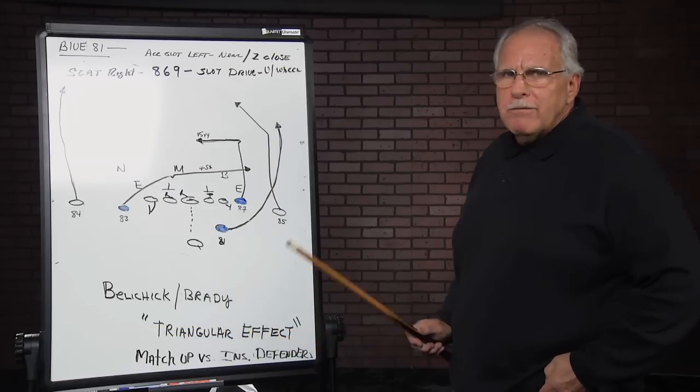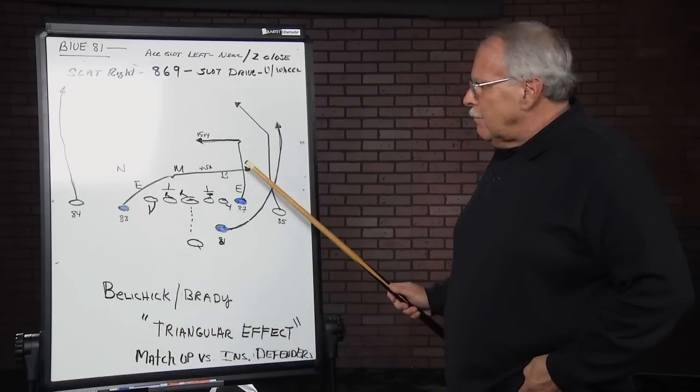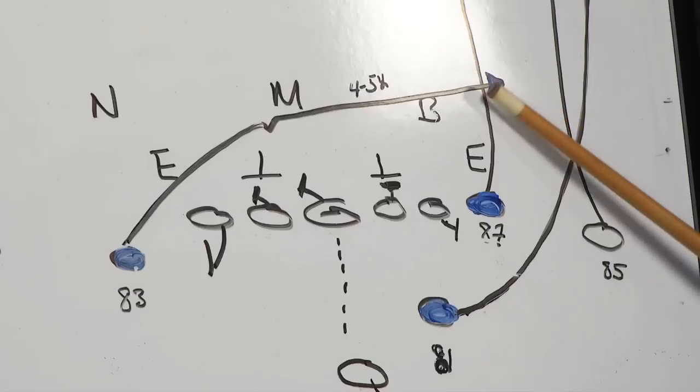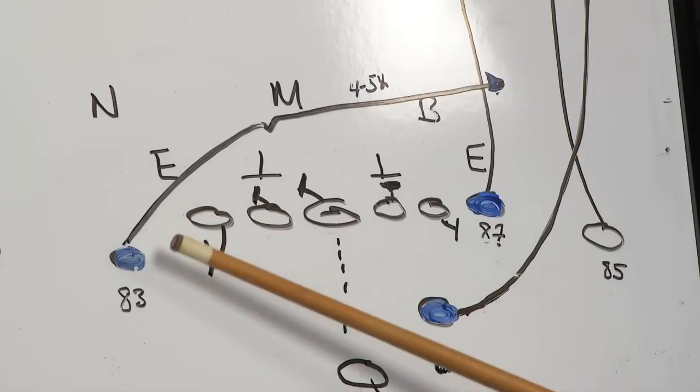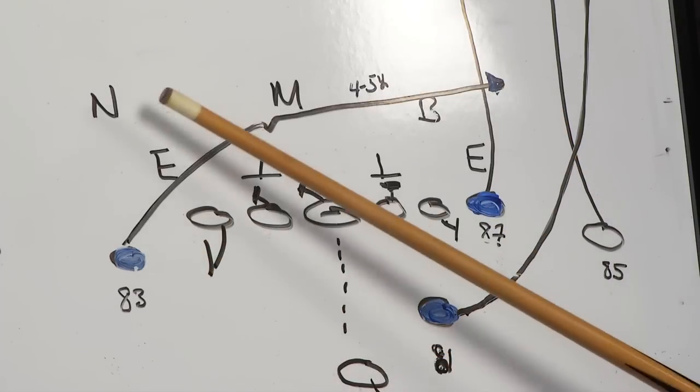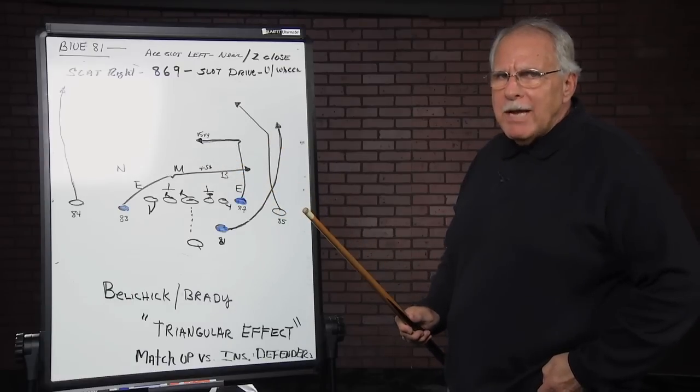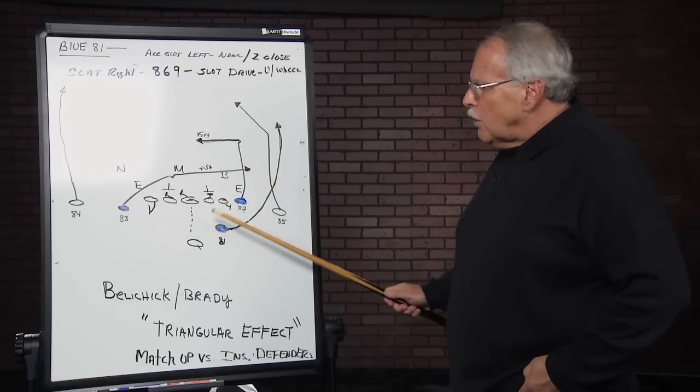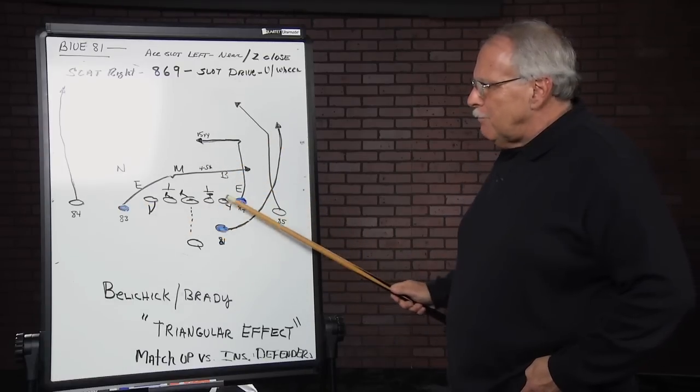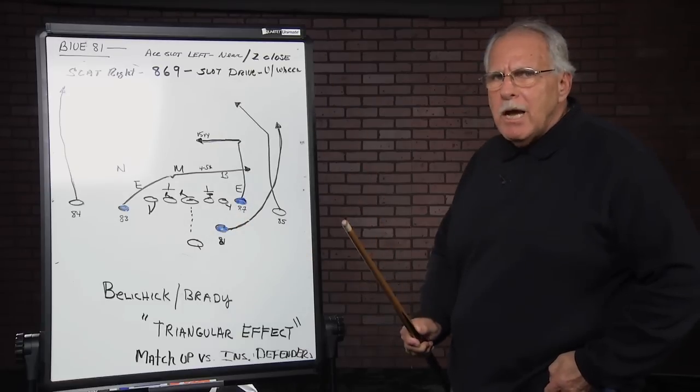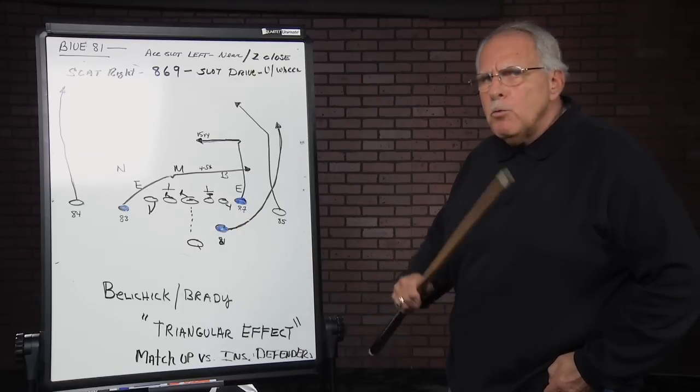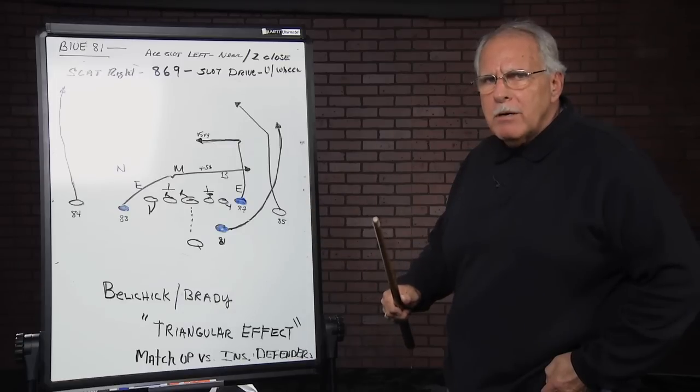Again, what they're trying to do with the triangular effect is they're trying to get matchups on people, ideal matchups for them on these three fine football players on average to below average inside matchups. Now the play I've drawn up is a classic example of using these three guys in concert in which they all can be primary receivers.